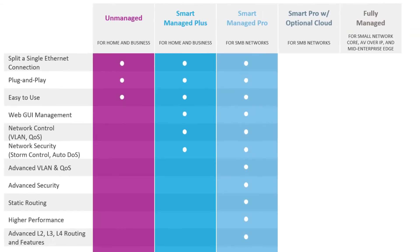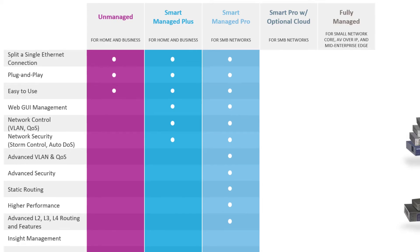Now, moving up to Smart Managed Pro for your small, medium-sized business, even more security is added to these switches, along with features like static routing, a higher overall performance, and also the advanced level 2, 3, and 4 routing, and features that go along with those that you need for those types of networks.